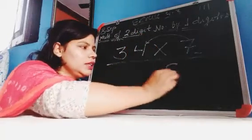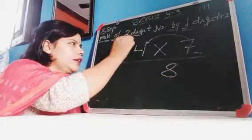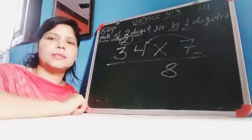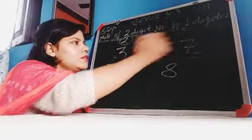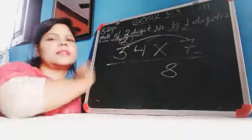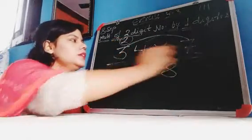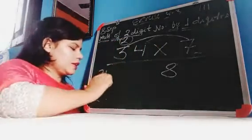7 fours are 28, we write 8 here and 2 will be carry in next number. Understand, then after multiplying this number we multiply this by this number. 7 threes are 21, and 2 is carry here. After multiplying this we add this number, this is 238.